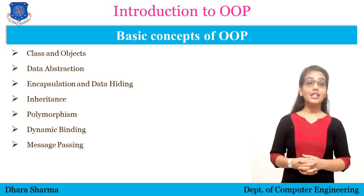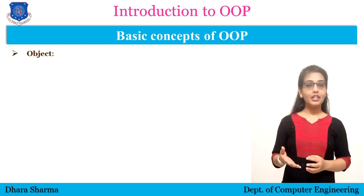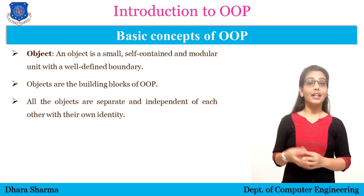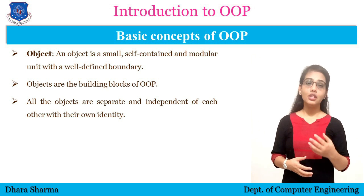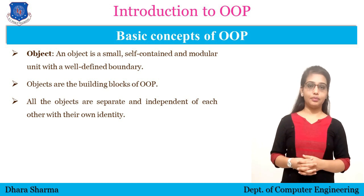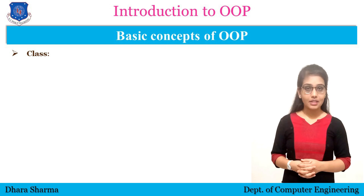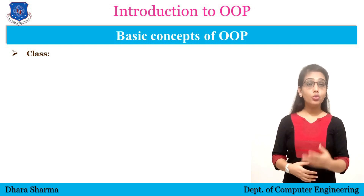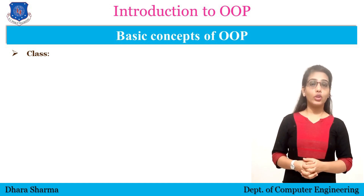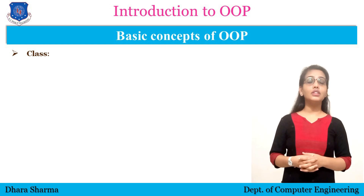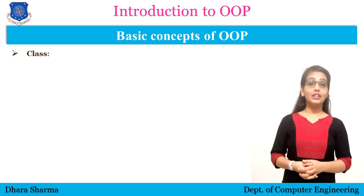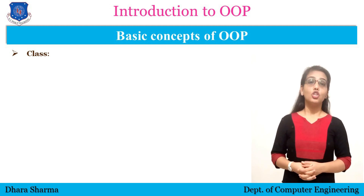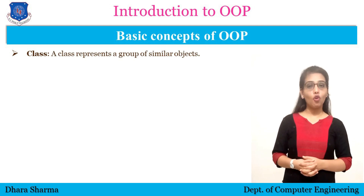First of all, let's understand what is an object. Any real-world entity can be considered as an object that has some information required to be stored. For example, a student. Now let's understand what is class. For example, 50 students are studying in computer branch in third semester. All those 50 students are in the same class learning the same subjects, so they can be considered as a similar type of objects. So class is a collection of similar type of objects.